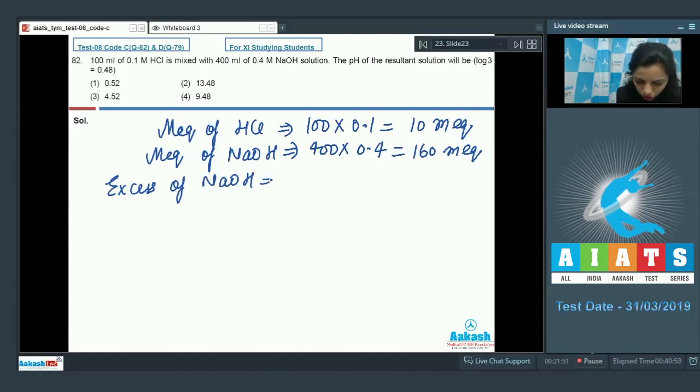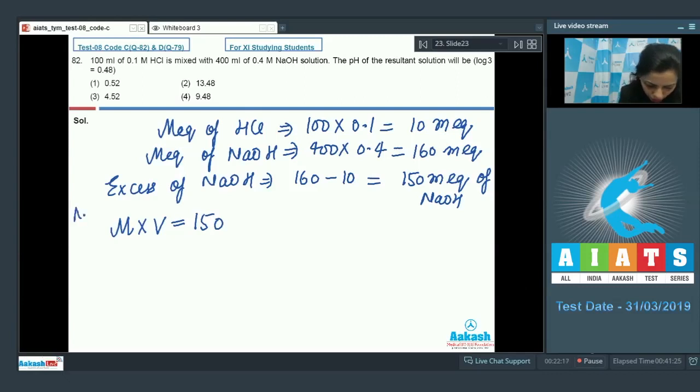And these are 160 minus 10, it means 150 milliequivalents of NaOH are remaining in the solution. Now let's find out the molarity of NaOH on the basis of this. Molarity of NaOH times its volume times n-factor is giving you the milliequivalent. It means in this case 150 is there, this is for NaOH.